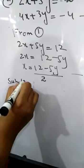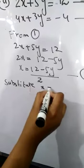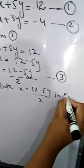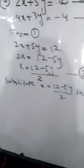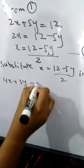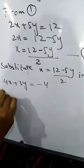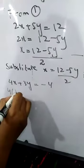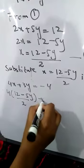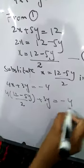Now substitute the value of x in equation 2. Where is equation 2? Substitute the value of x here. Value of x is 12 minus 5y over 2. So we have 4 times (12 minus 5y) over 2, plus 3y equals minus 4.